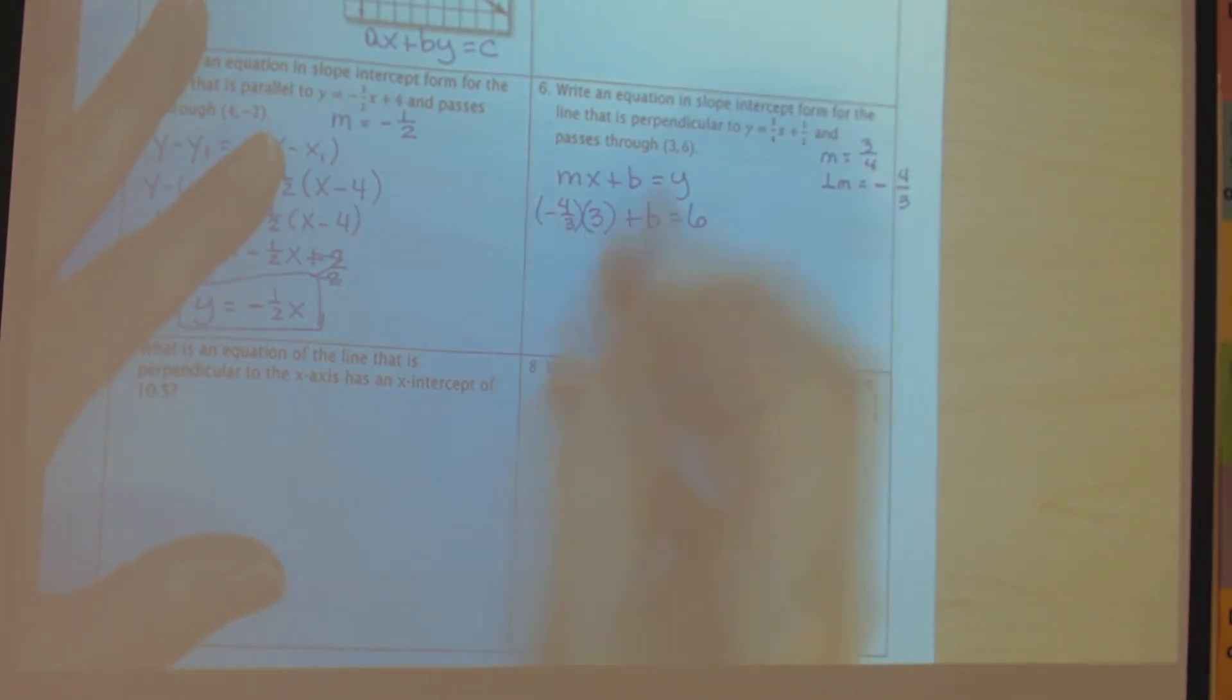Negative 4 thirds times 3, these 3's cancel, leaving negative 4. Then I simply add 4 to both sides, these zero out, so my y-intercept is 10. So the equation is going to be y equals, use the perpendicular slope, don't forget your x, and then add b.